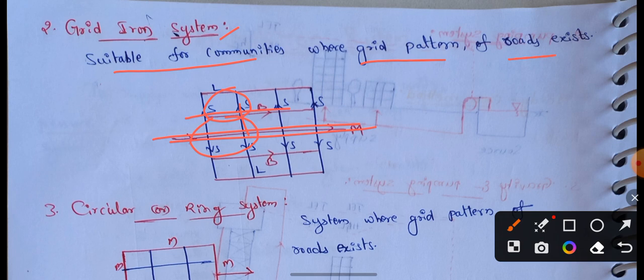Disadvantages of the grid-iron system: water cannot be polluted easily, but the system demands more length of pipes and a larger number of valves and units. Design is difficult and not economical due to the high cost of pipes and fittings.